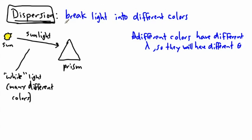We can say we split the light. What's really going to happen then is the red light, which has a larger wavelength, will have a smaller angle of refraction. So this right here might look red, then we might have something like yellow in the middle, and then blue over here. These colors spread out, which makes a sort of rainbow effect. That's really what dispersion is.